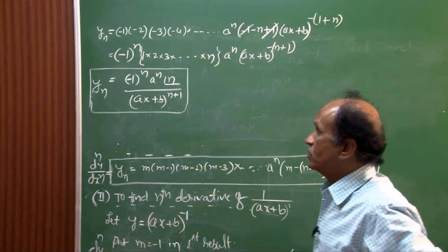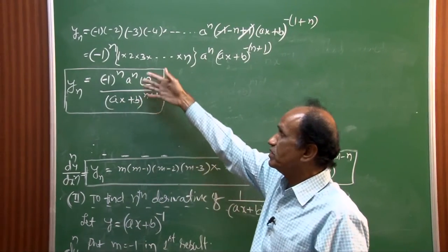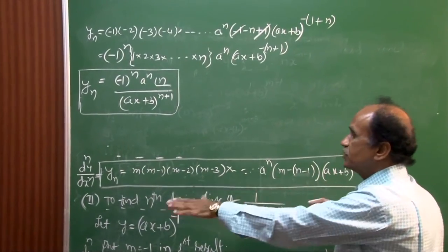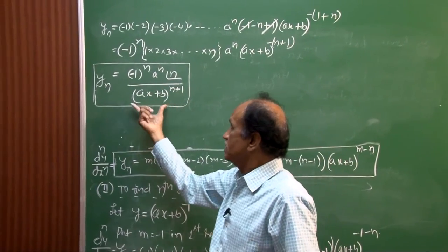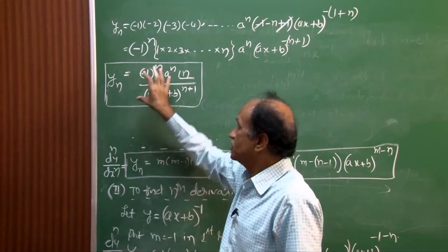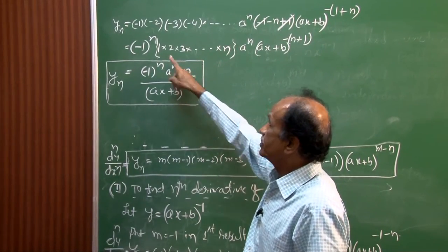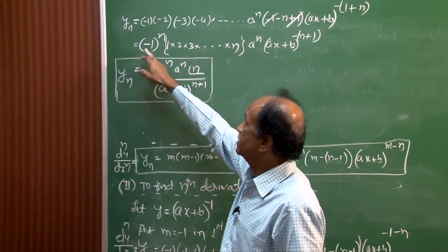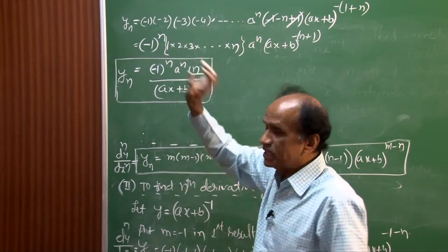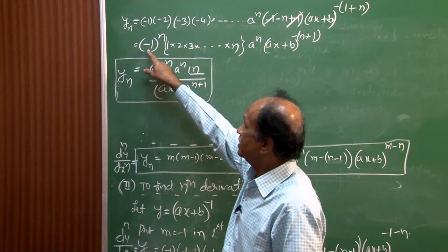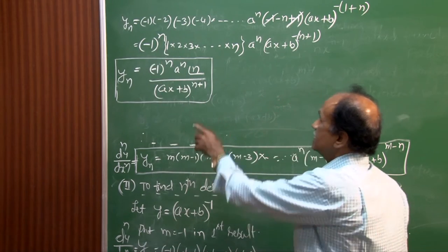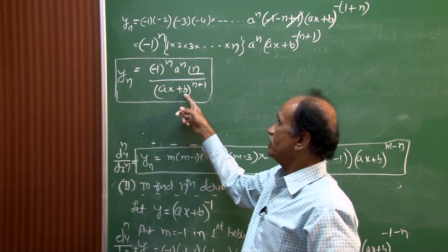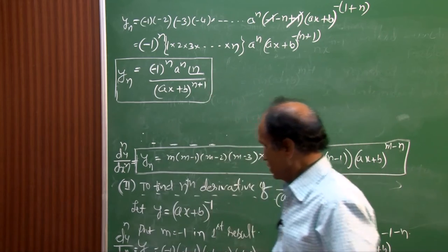This is the second standard result. Comparing with Result 1 (in series form), Result 2 is written in compact form: n! represents 1·2·3···n, aⁿ remains, and (−1)^n accounts for the alternating sign. This result will be used in almost all algebraic function nth-derivative problems.